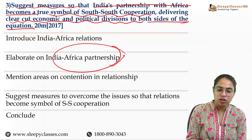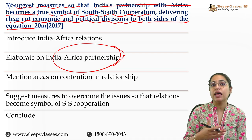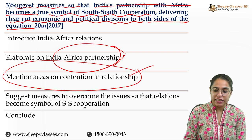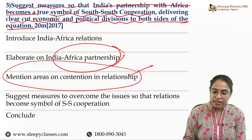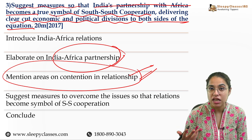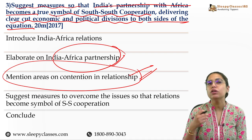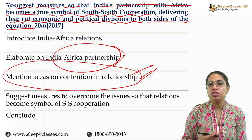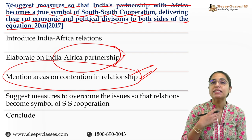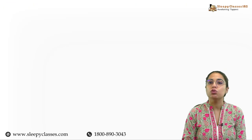Then very importantly, you have to measure areas of contention — only then will you suggest how this partnership is not reaching equitable benefits, or what challenges are preventing the relationship from reaching its potential. Then, what are certain measures through which India and Africa's relationship can become a massive example for South-South relations? Before concluding the answer, it is important that you quote scholars from various papers and give examples.